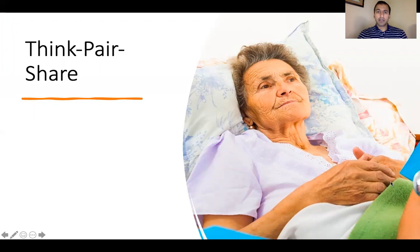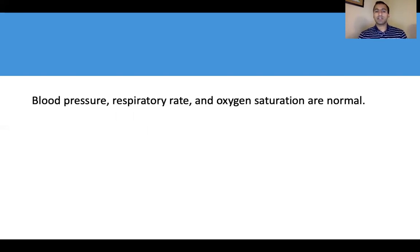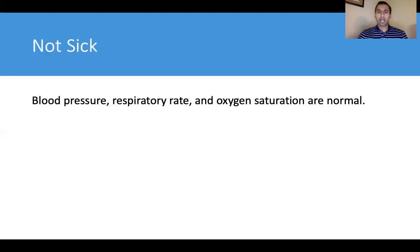Another think-pair-share: take 30 to 60 seconds to consider what are two or three things you can quickly look at to determine if a patient with acute encephalopathy is sick. A lot of folks mentioned looking at the ABCs — airway, breathing, circulation — and vitals. In this case, blood pressure, respiratory rate, oxygen saturation, and heart rate are all normal. Based on this information, we can make a pretty safe assumption that this person is not sick as we defined it.